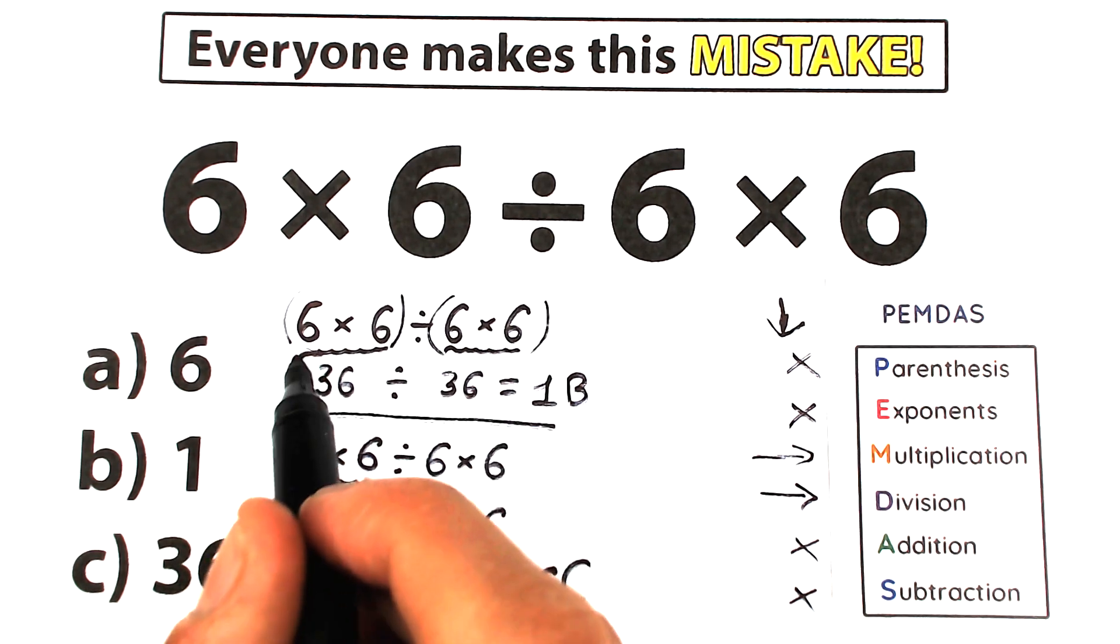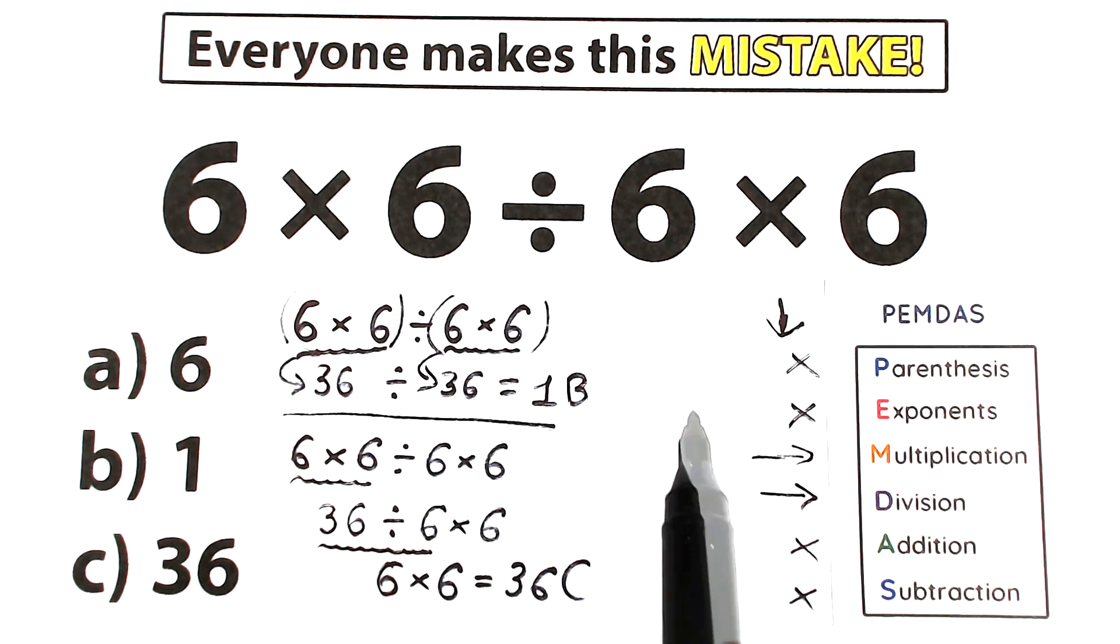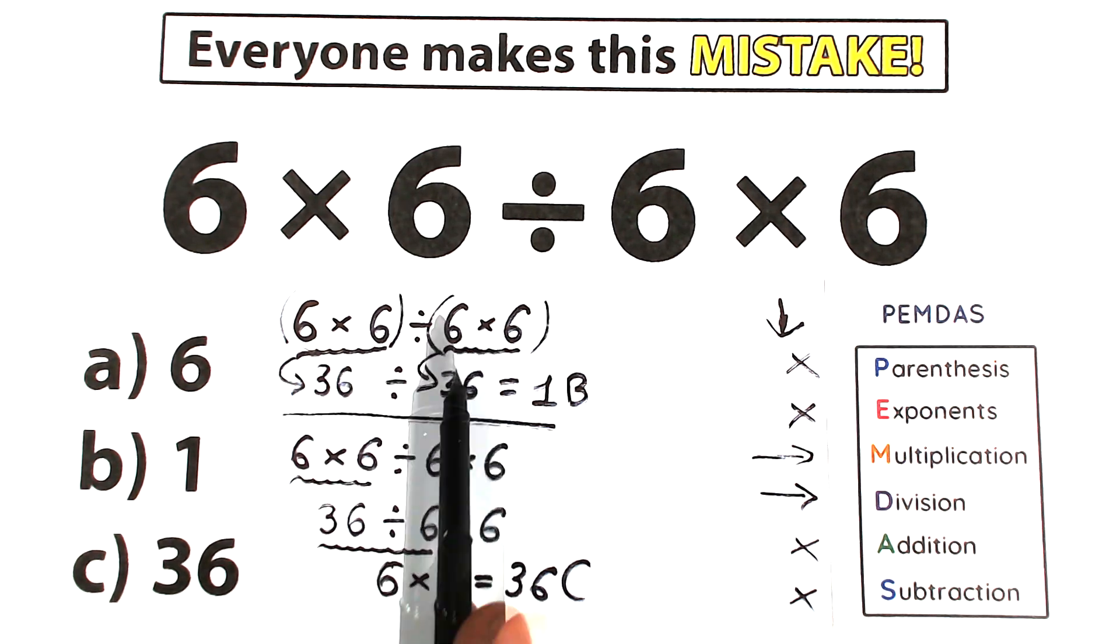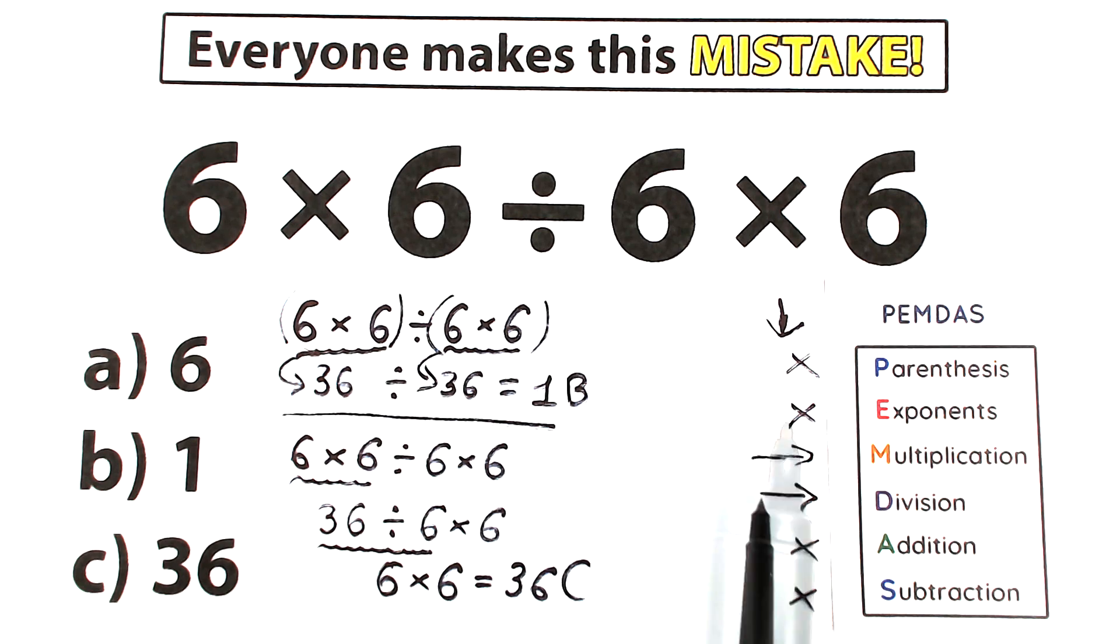because then we should start from these parentheses right here, and then from these parentheses, and then multiplication will have the higher priority than division, because multiplication is inside parentheses, which is our first step.